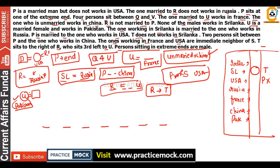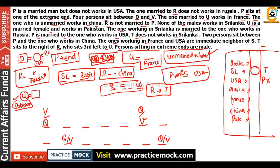There is no clear hint here since U is given but V and Q are not. So we will take two possibilities. Q can be at one end with V further in, or V can be at one end with Q further in. Combined with P being at an extreme end, we will need to make 4 possibilities. P will be placed at either extreme end, and with 2 gaps between P and China, China will be fixed accordingly.